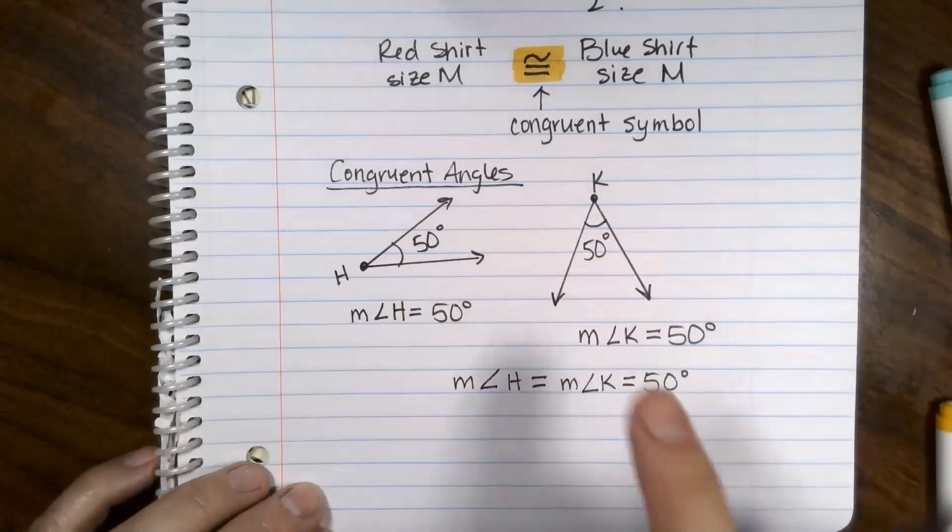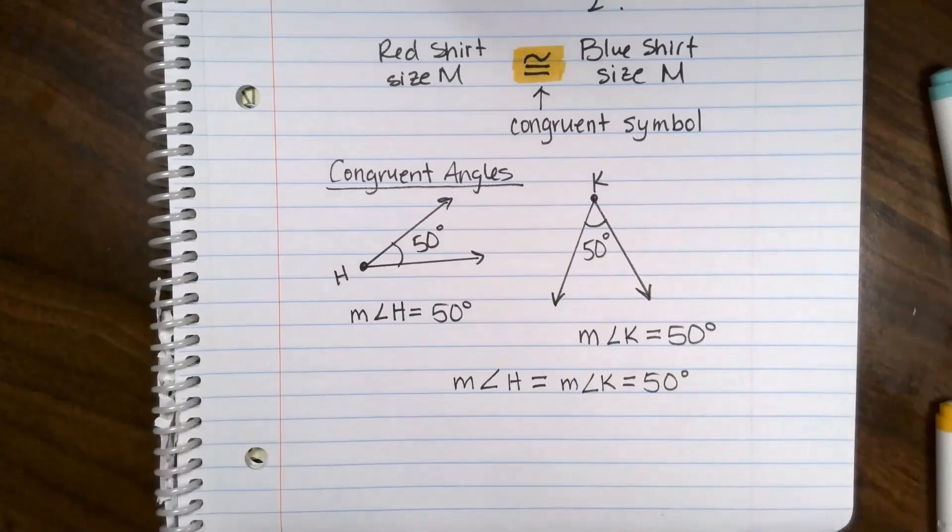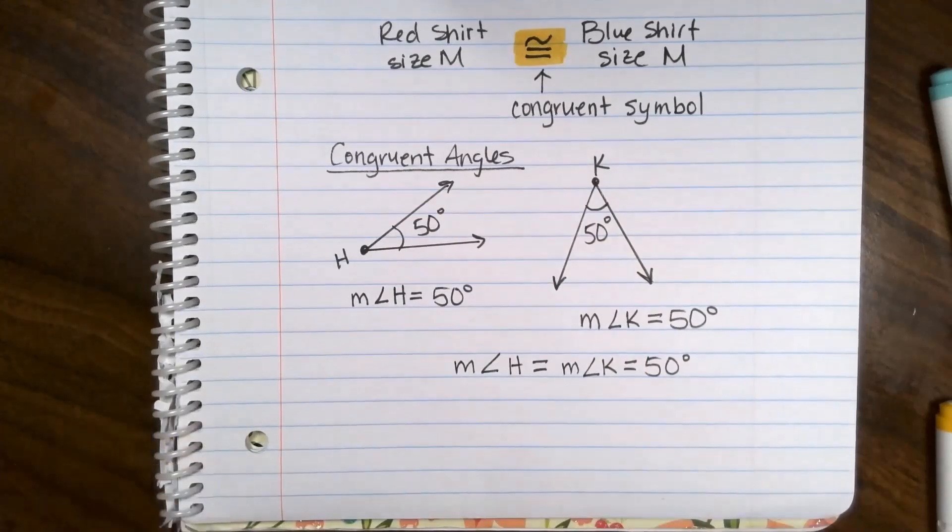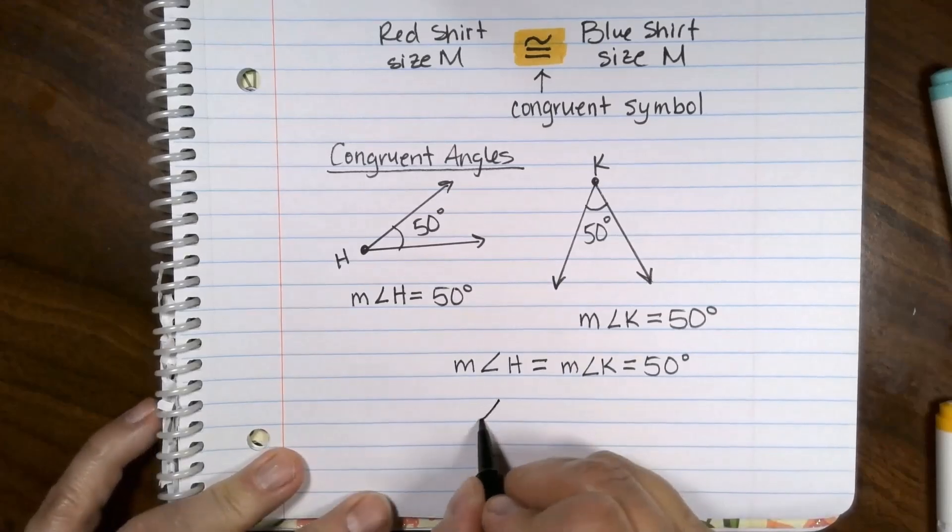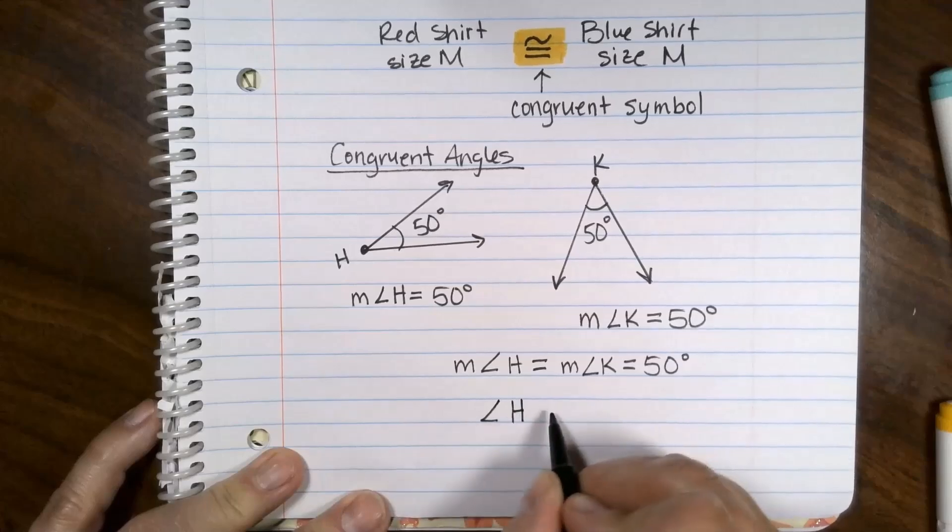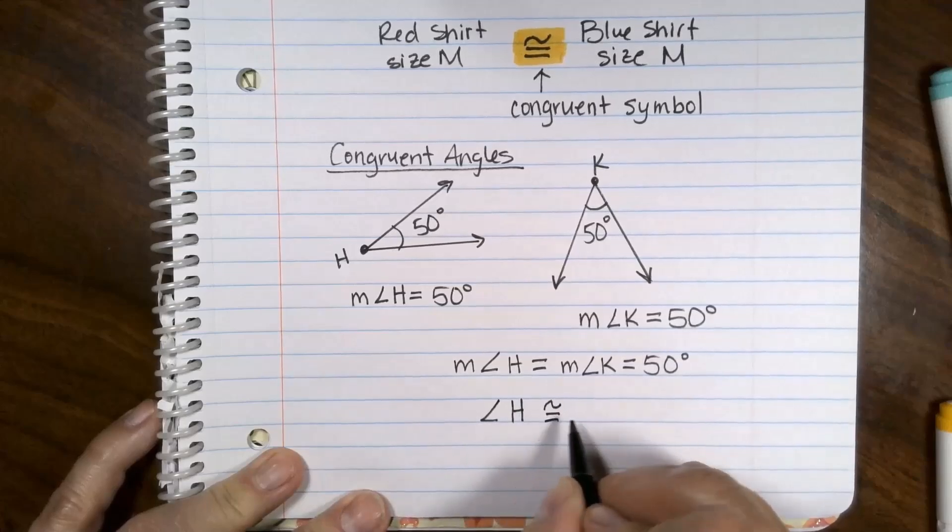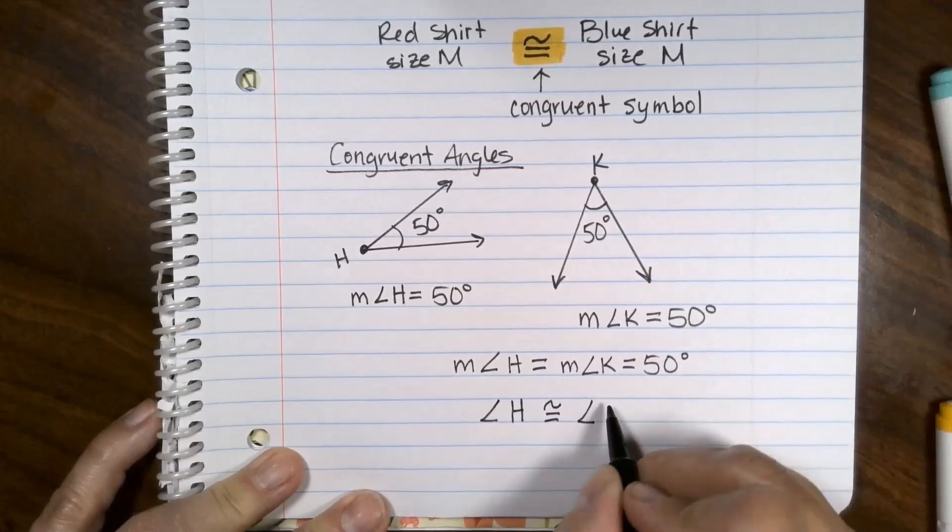50, 50. 50 degrees is 50 degrees, and they both equal 50 degrees. Because this is true, I can now say, using their names, that angle H is congruent to angle K.